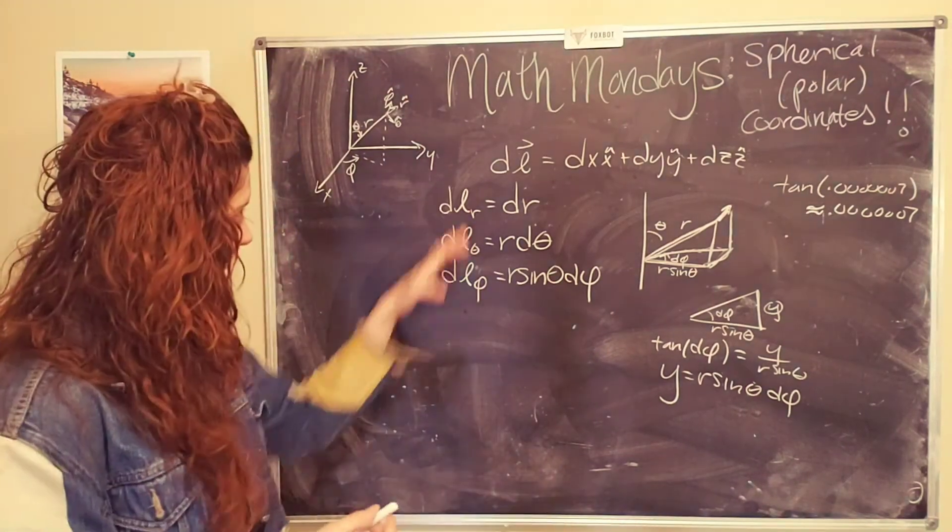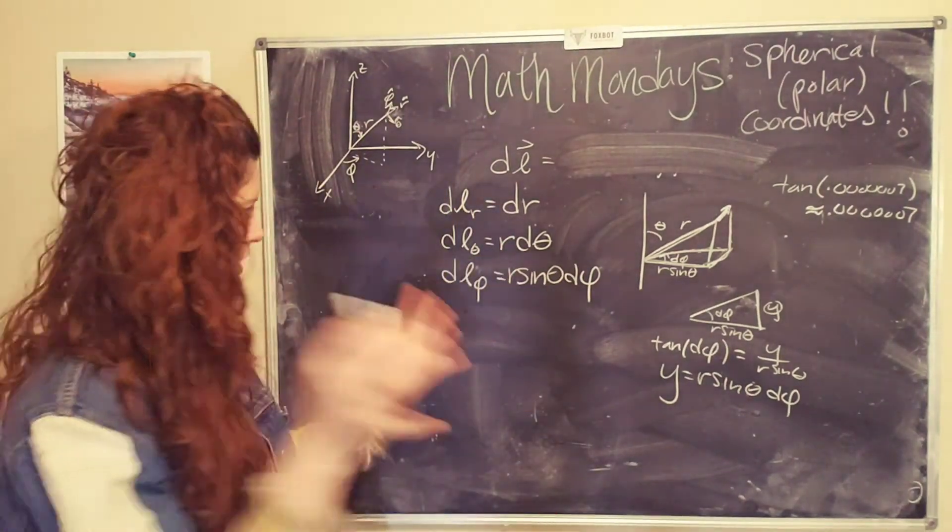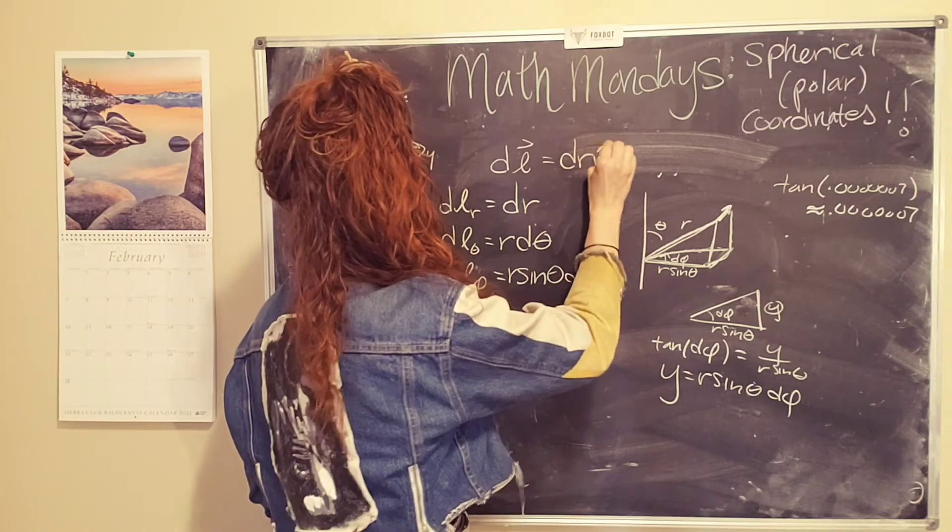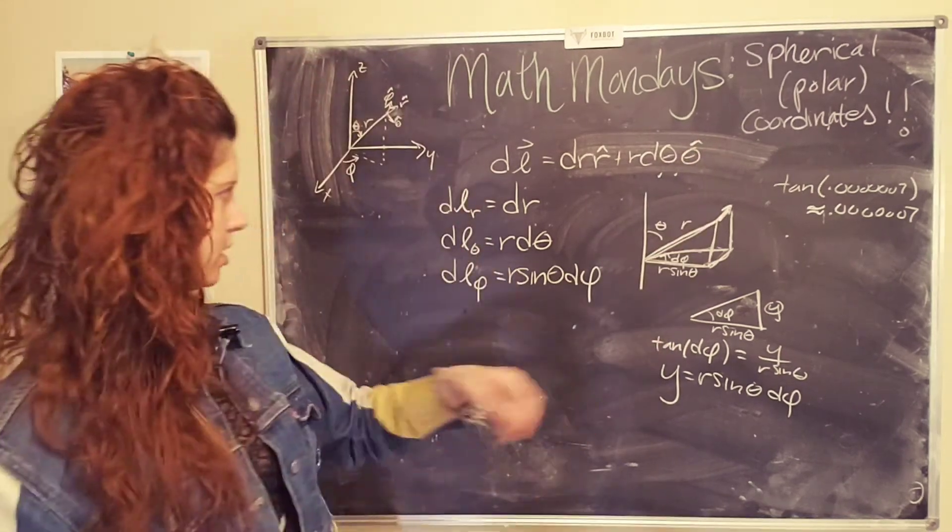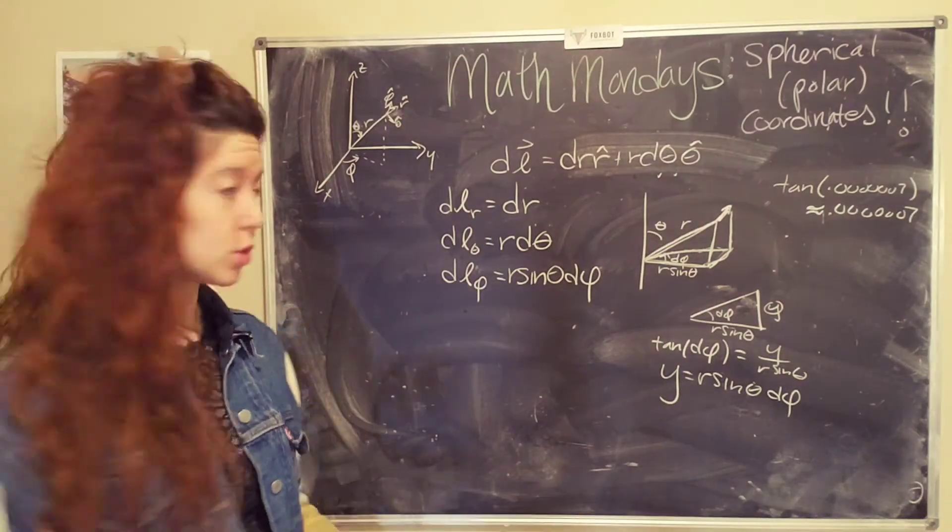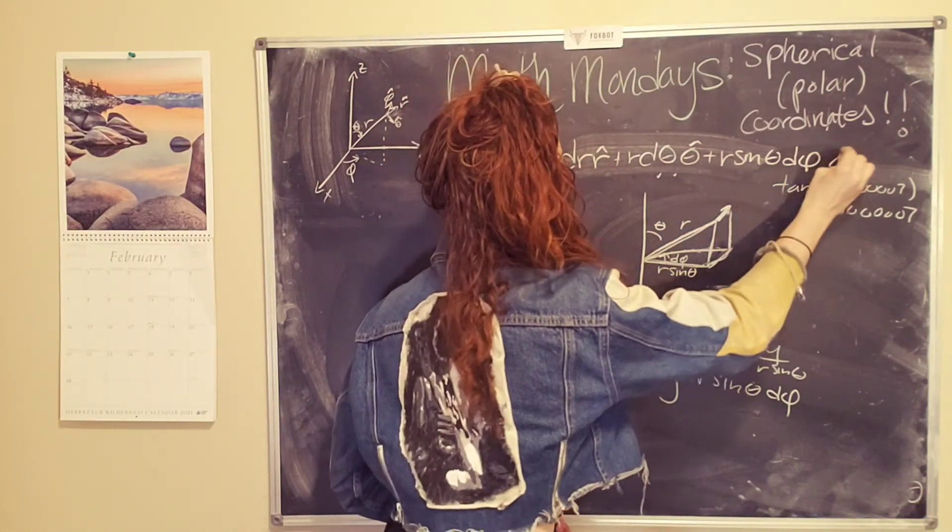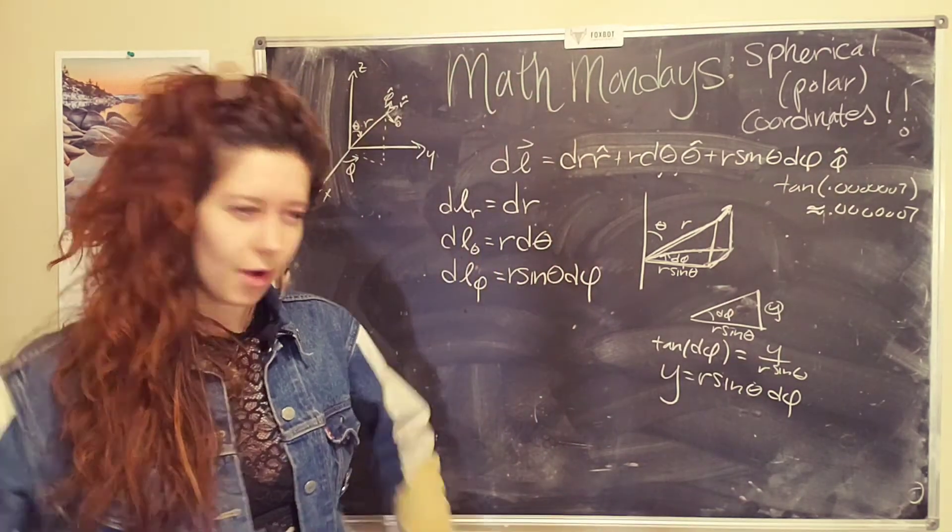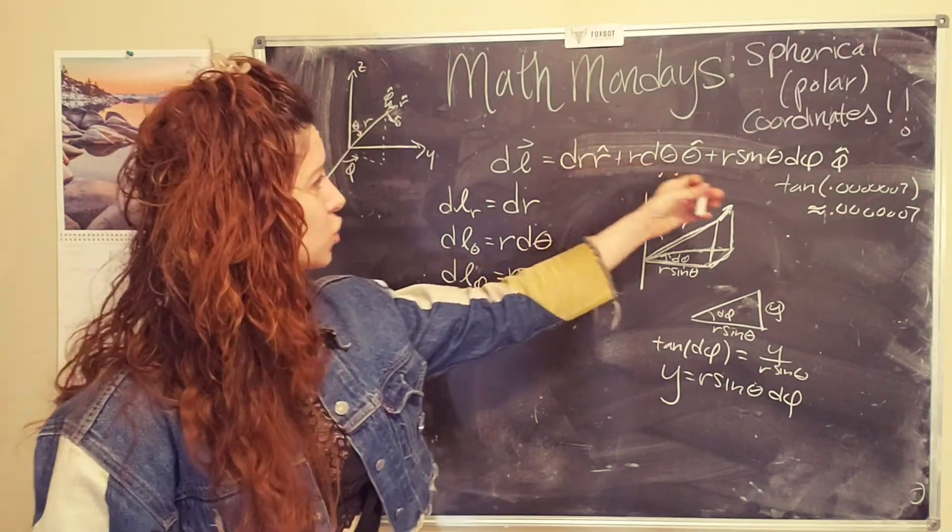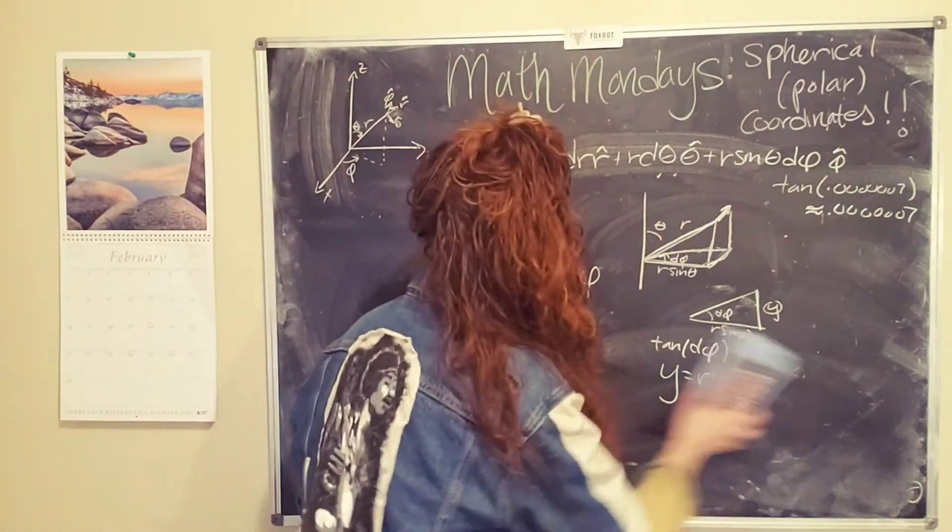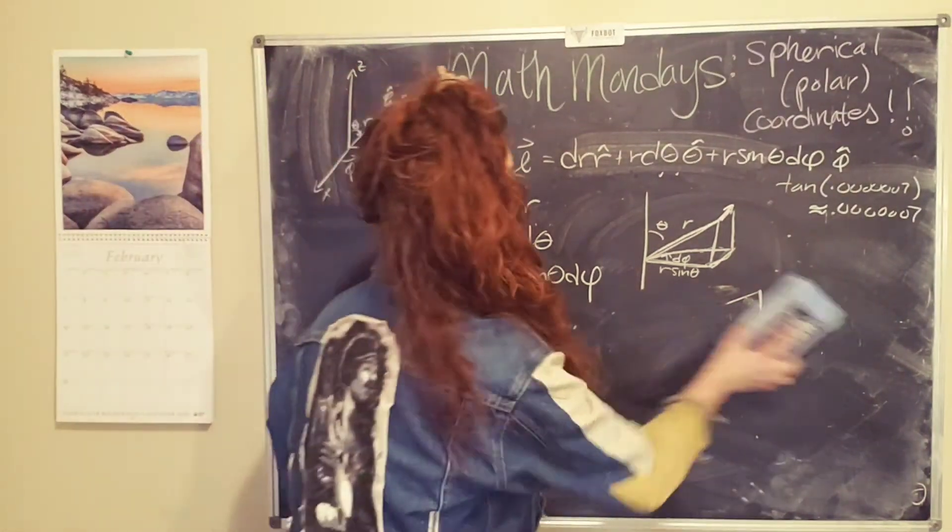Okay. So we have R sine theta D phi. That's it. So now we can write our infinitesimal displacement vector in spherical coordinates. So we have DR in the R hat direction plus R D theta in the theta hat direction. Those are just the unit vectors in that particular direction. And then we have R sine theta D phi in the D phi hat direction. Super cool. Okay. All right. That's all fine and dandy, but how do we actually use this? What the heck do these extra components do when we're actually doing an integral? Oh, great question, invisible audience.